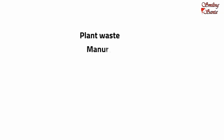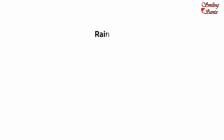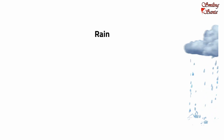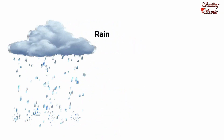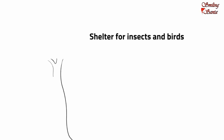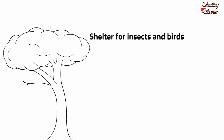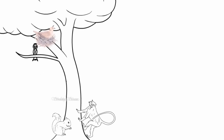Plant wastes are used to make manure, which is used as a fertilizer for farming. Plants even help in bringing rain. Plants and trees provide shade and shelter to several insects, birds and animals. Birds make nests on branches of trees, and animals like monkeys and squirrels also live on trees.